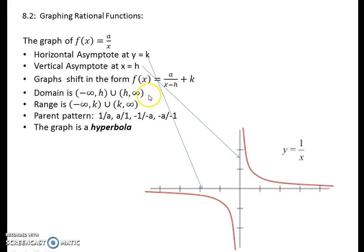Domains for these functions, for 1 over x, is all real numbers not equal to zero. It can be generalized to all real numbers not equal to your horizontal shift. And the range is all real numbers not equal to your vertical shift or your k value.